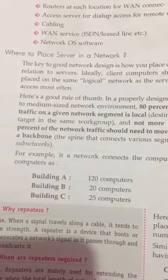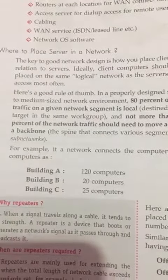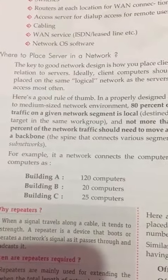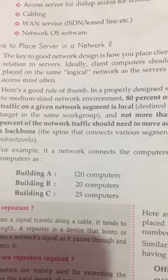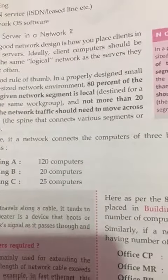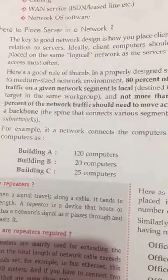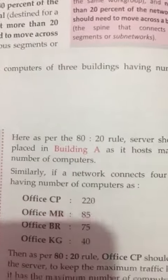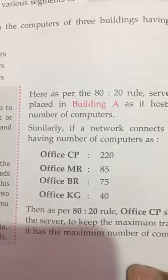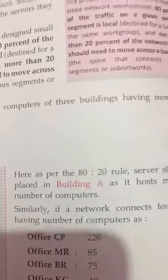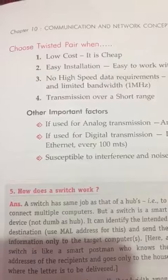On behalf of place server in a network, there are buildings A, B, and C. In building A there are 120 computers, in building B there are 20 computers, and in building C there are 25 computers. In these computers there is Office CP 220, Office TIP 5, Office BR 75, and Office Casey 40. After this, the next thing is to choose between coaxial and twisted pair cable.